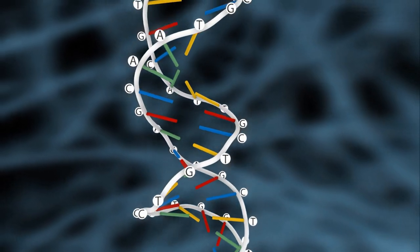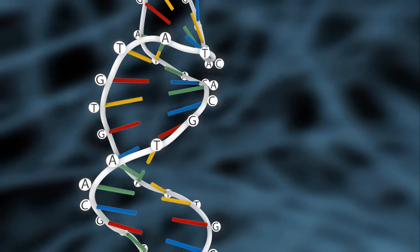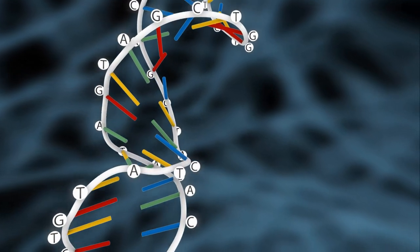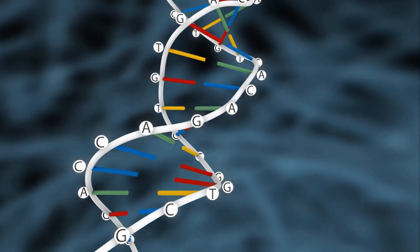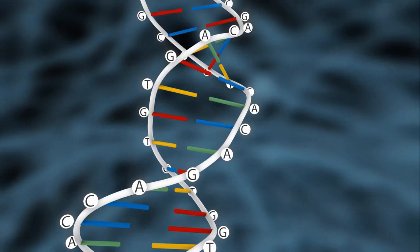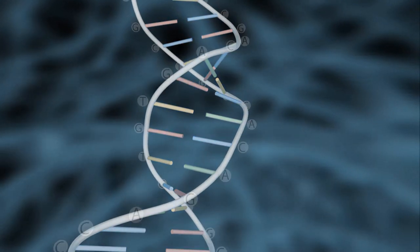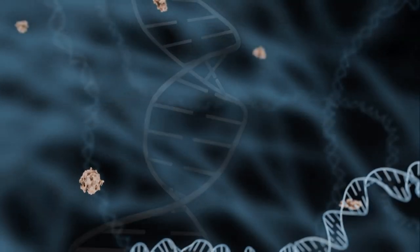Their precise order, called sequence, determines the genetic information, which is used by the cell to produce the proteins required for its functions. Each gene resembles a written sentence using a four-letter alphabet, which gives precise instructions to the cell.